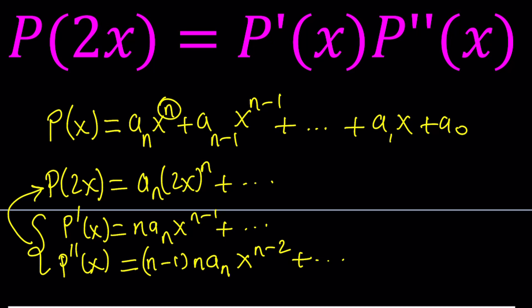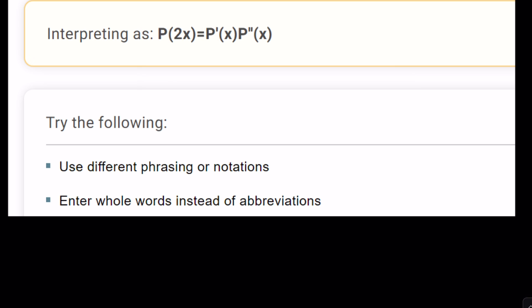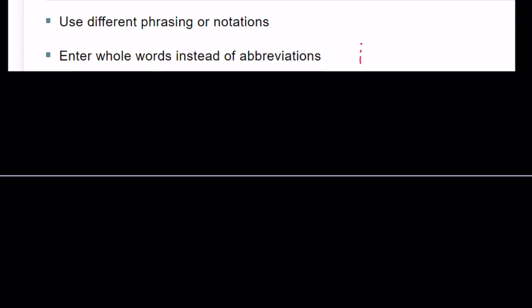But before that, let's go ahead and take a look at what Wolfram Alpha has to say about this polynomial equation. Interpreting as follows. Yes, the interpretation is correct, but unfortunately, there are no solutions by Wolfram Alpha. Too bad. It can't interpret it. It says use different phrasing, enter whole words, so on and so forth. There are so many other things that it uses as an excuse. This still shows that we human beings are smarter than AI. Still.